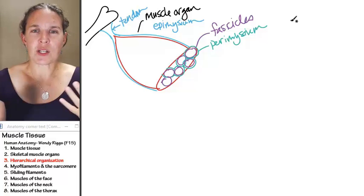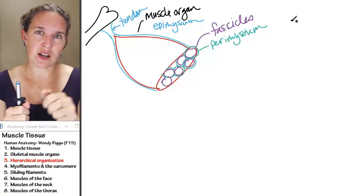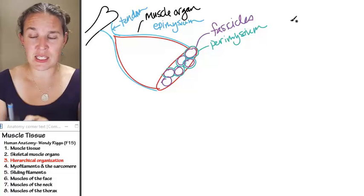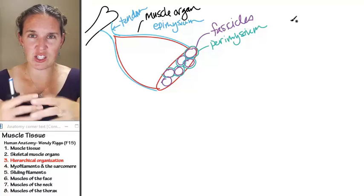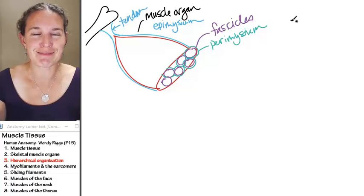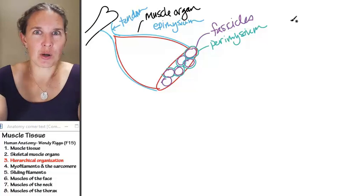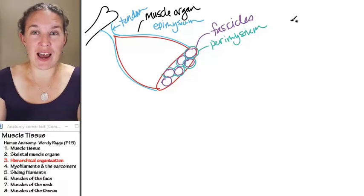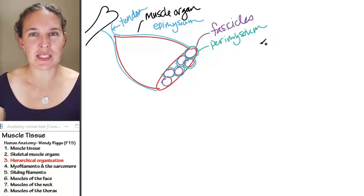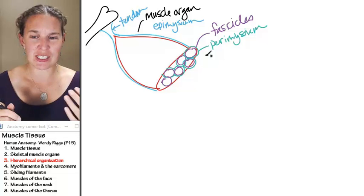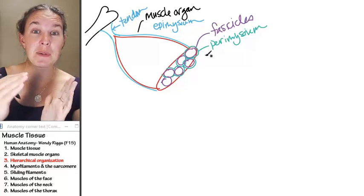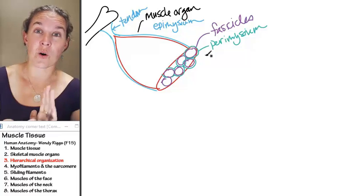Perimysium surrounds each individual fascicle. If you go, we talked about in the last section how you could like string beef or steak or meat that you eat. You can pull pieces of it and like string it all up. You can make a pulled pork sandwich. All of those pulled pieces that you string out, those are all fascicles surrounded in perimysium. The perimysium actually keeps the fascicle together. The epimysium keeps the whole organ together.